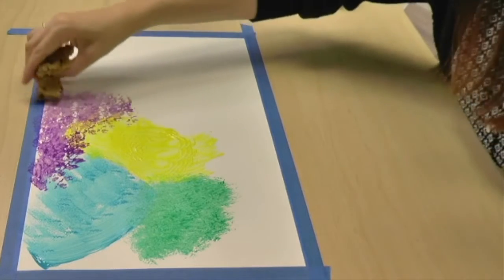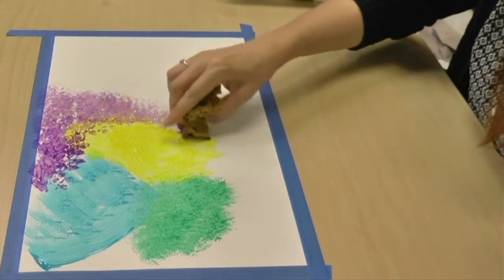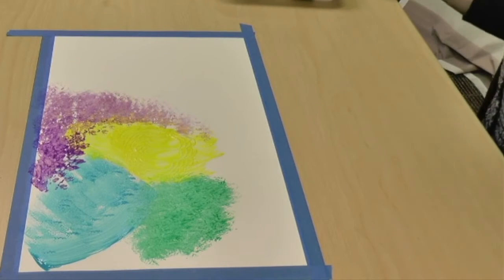And also if you're painting a sunset, there's lots of different colors for that like red, pink, yellow, orange.